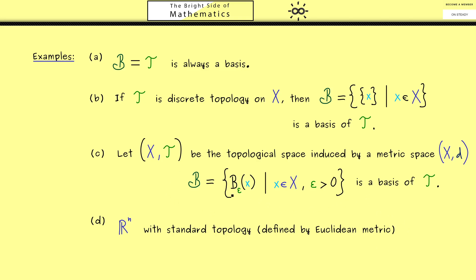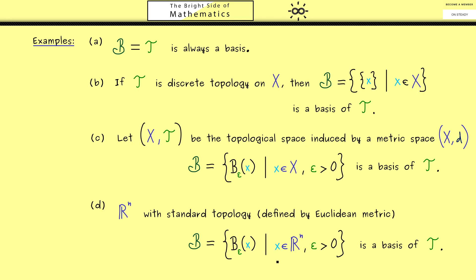But now with epsilon balls defined by the Euclidean metric. In this sense, you would say the basis looks the same. We go through all points and through all possible epsilons.